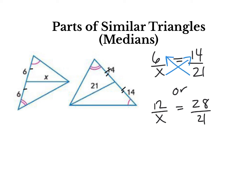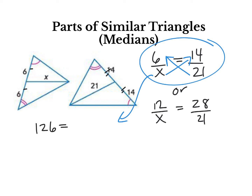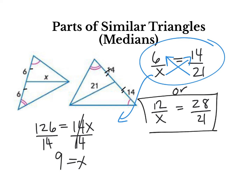We do the exact same thing — cross multiply and solve for x. I'm going to go with the smaller numbers because it's easier to multiply, but you can choose whichever one you pick and they will both give the same answer. Cross multiply: 21 times 6 is 126. So 6 times 21 is 126 equals 14 times x. Divide both sides by 14. And if you do the other proportion, you should get the exact same solution. So medians are also proportional — the height of a triangle is proportional, the median is proportional.